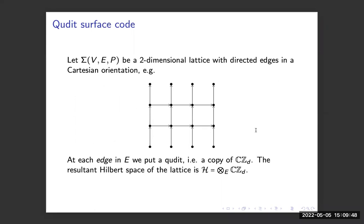Having given a bit of algebraic background, I'm going to introduce a surface code. We have a two-dimensional lattice — for convenience I'm making it a square lattice with arrows going either up or right — but this works for more or less any lattice embedded on a 2D surface. On each edge we put a qudit that is a copy of the group algebra, so the whole Hilbert space is just a tensor product of all of these.